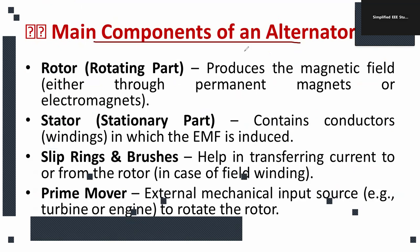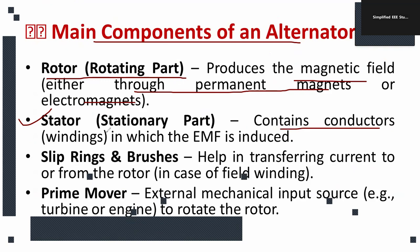The major components of the alternator include the rotor, which is the rotating part that produces the magnetic field either through permanent magnets or electromagnets. The stator contains conductor windings in which the EMF is induced. We also have slip rings and brushes, which help in transferring current to the rotor.